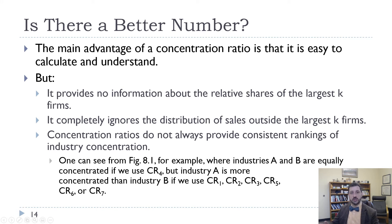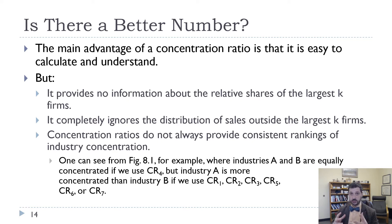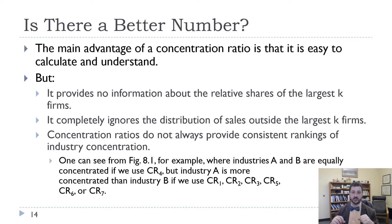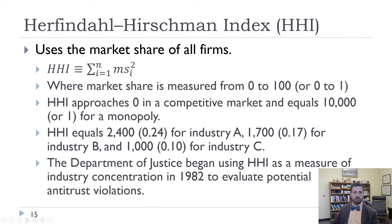That's a good number — easy to understand and easy to calculate. But it might not be the best number, because it provides no information about shares outside of the largest K firms and ignores the distribution. For example, industry A and industry B have the same CR4 of 80, but industry A has one really large firm at 40% while industry B has four similarly sized firms each with 20% market share. Industry A would actually be more concentrated if we looked at CR1, 2, 3, 5, 6, or 7. So maybe we can do something better.